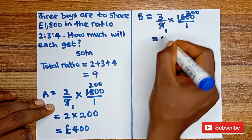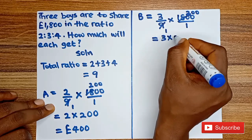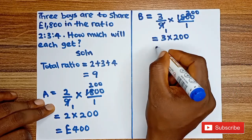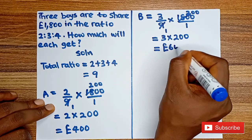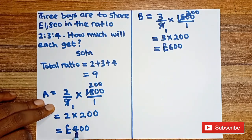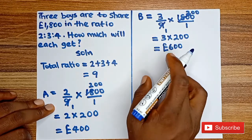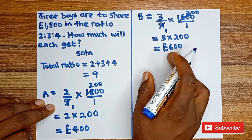So Boy B is going to get 3 multiplied by 200, which will give us £600. So Boy A got £400, Boy B got £600.